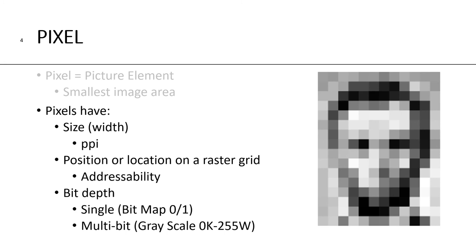The third characteristic a pixel has is its bit depth. It could be a single bit, which means it's either on or off — black and white, binary. Or it can be multi-bit, which would be a grayscale if it's 8-bit, where 0 is black and 255 is white. This illustration of Abraham Lincoln shows you the width or size of the pixel, its location in an XY coordinate system, and its bit depth in an 8-bit grayscale.